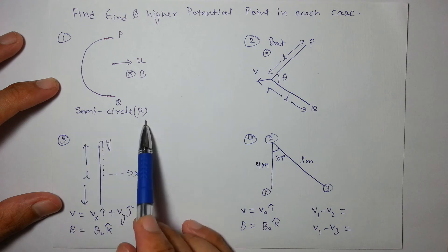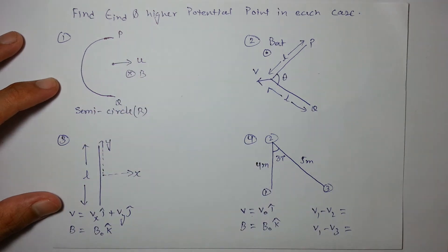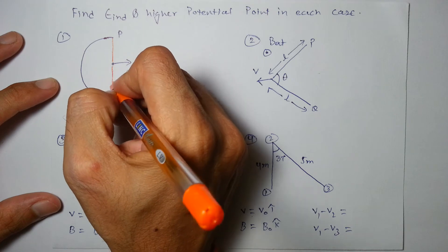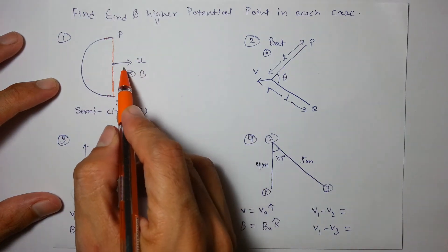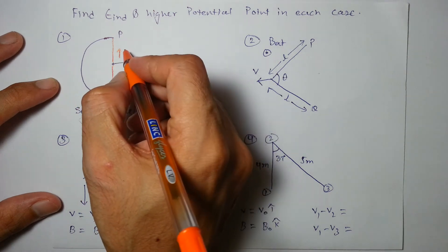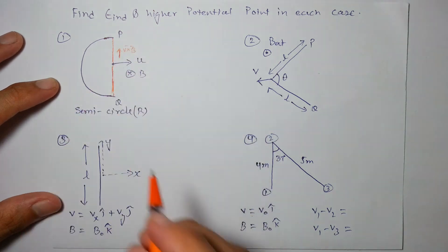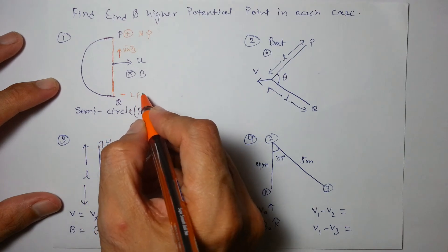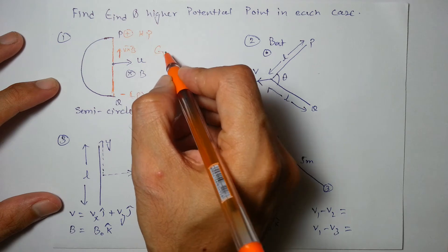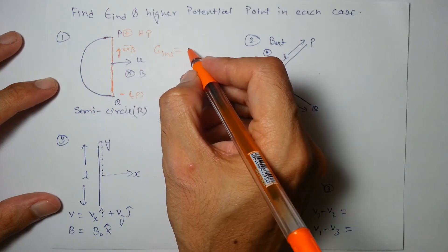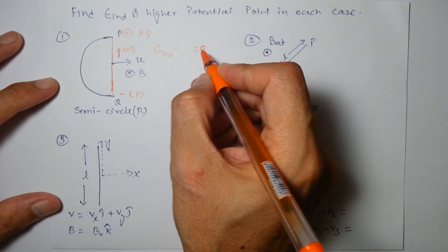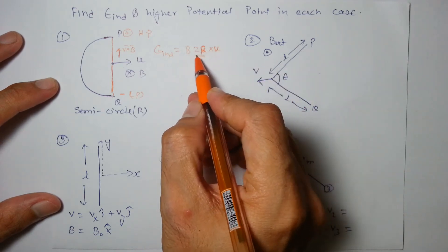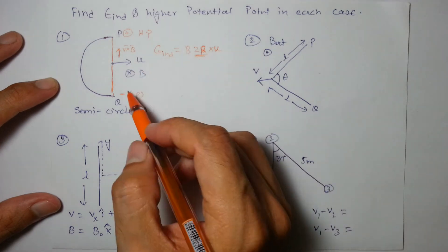This is a semicircle of radius R. The effective length will be obtained by joining the ends of the conductor. V cross B — with B inward — gives V cross B pointing upwards. So this end will be positive (high potential) and the other will be negative (low potential). The EMF is effective length × B × V, which is 2R × B × V, since they are mutually perpendicular.